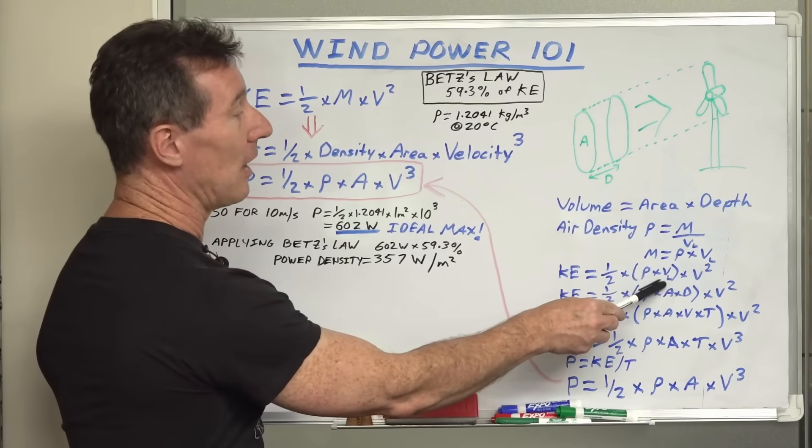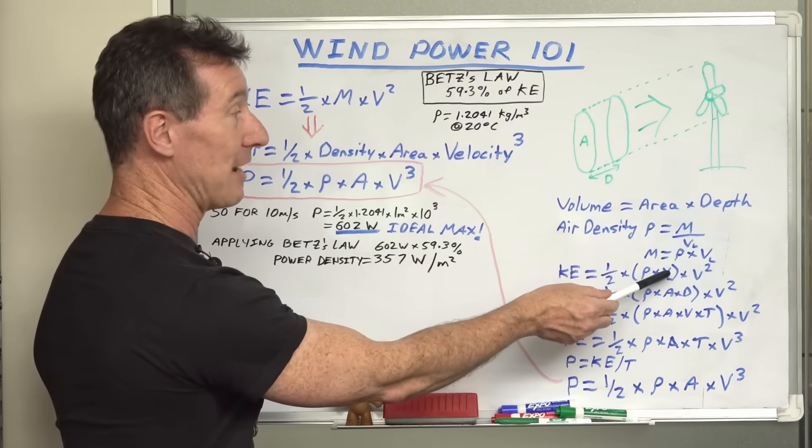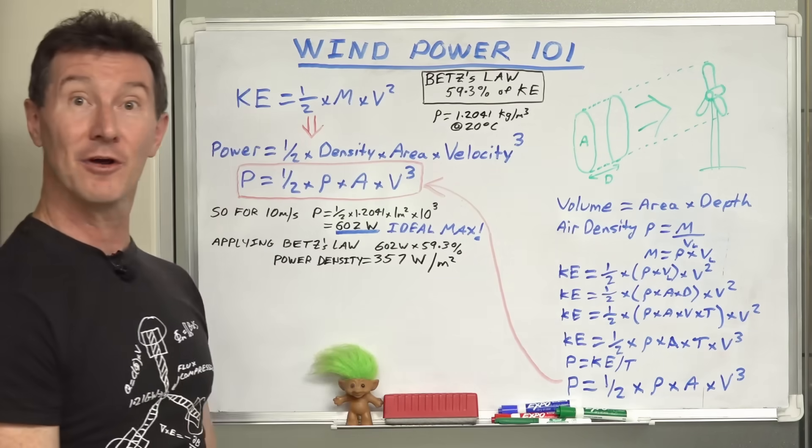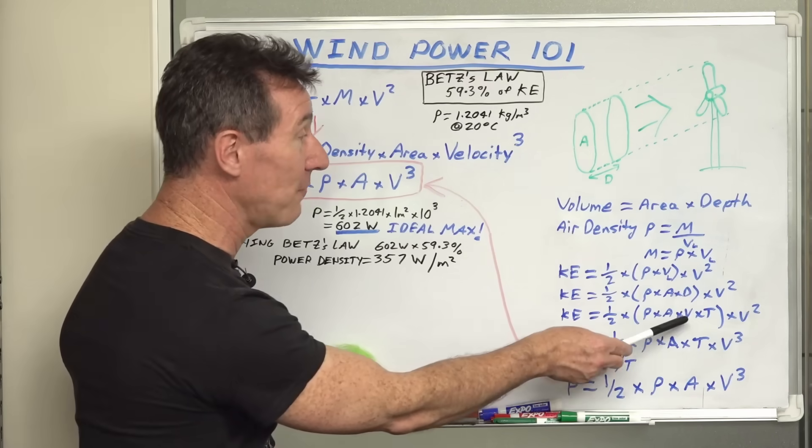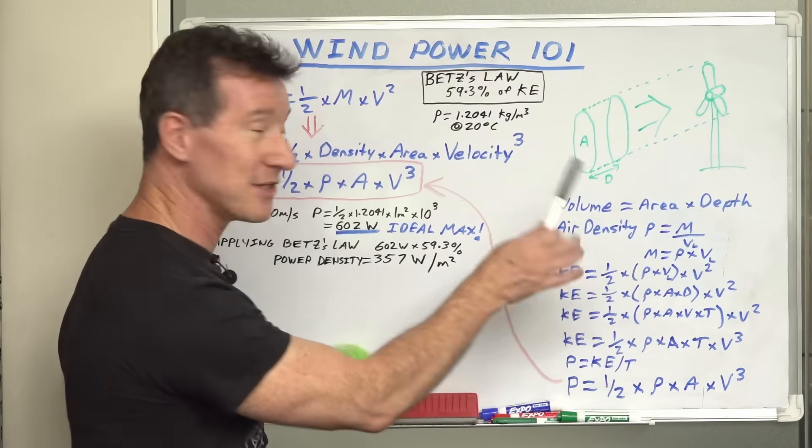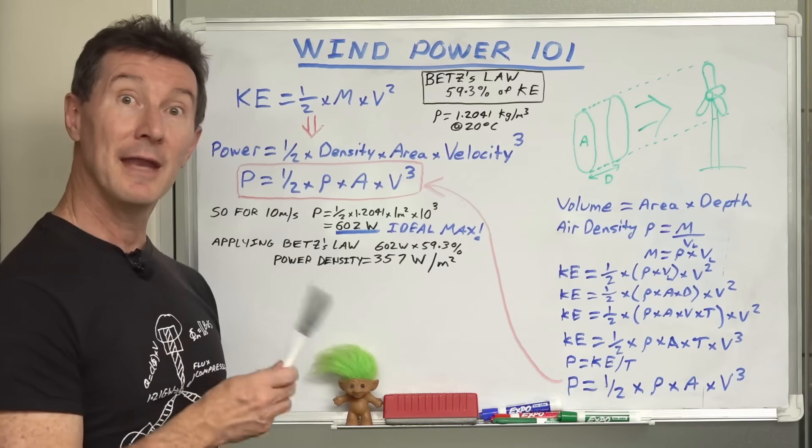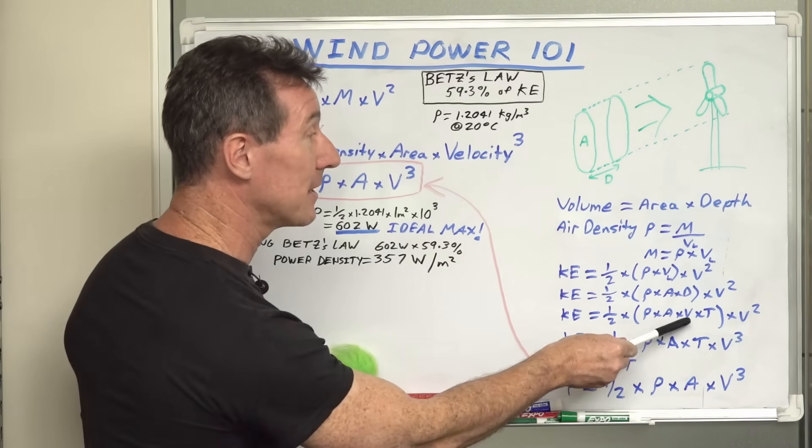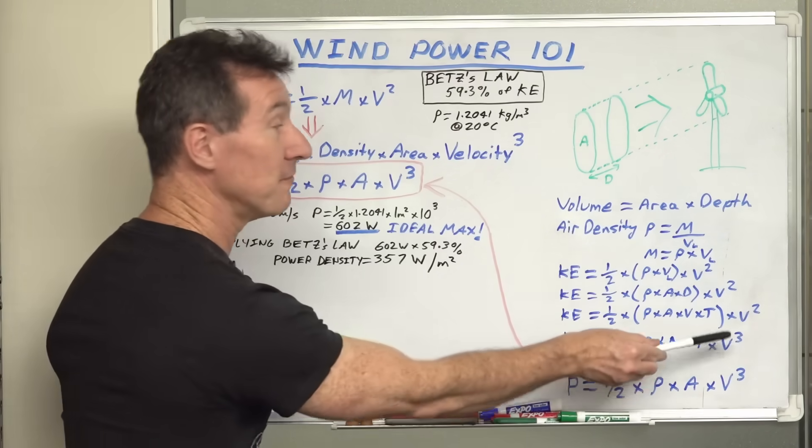Now of course, the volume of this is the area times the depth. So we can just change that from volume to area times the depth. And the depth here can be replaced by velocity times time. We're just substituting in to get this to pop out the other end. Because we've got two velocity components in this formula, V squared becomes V cubed.